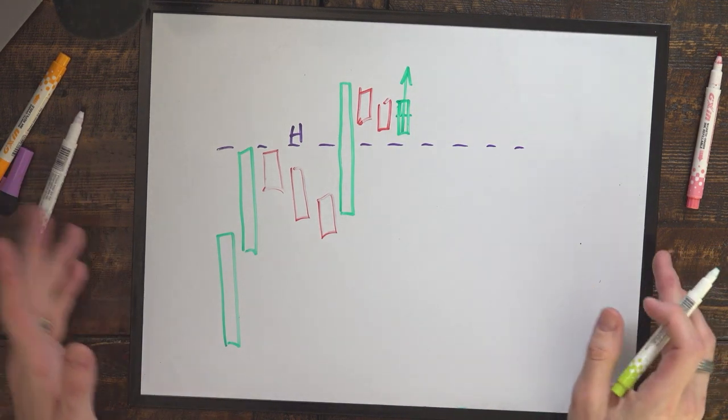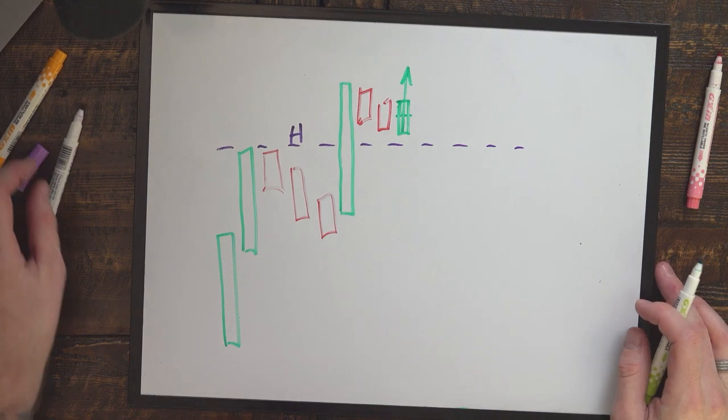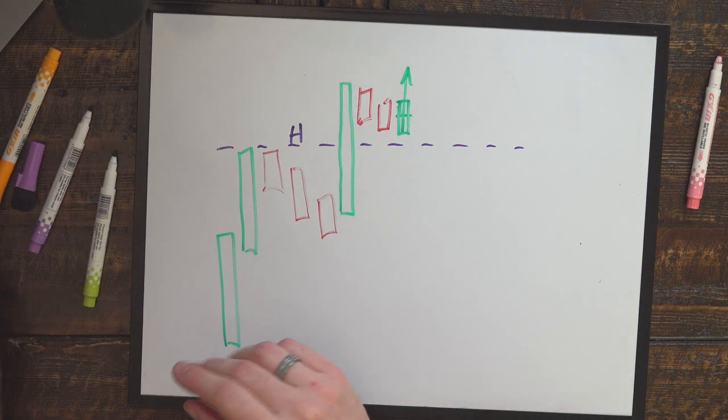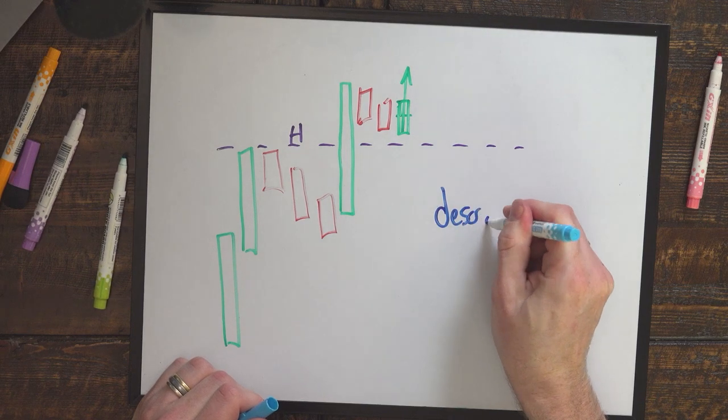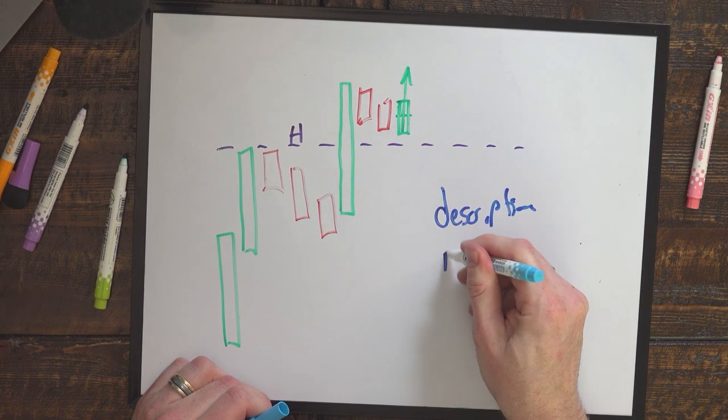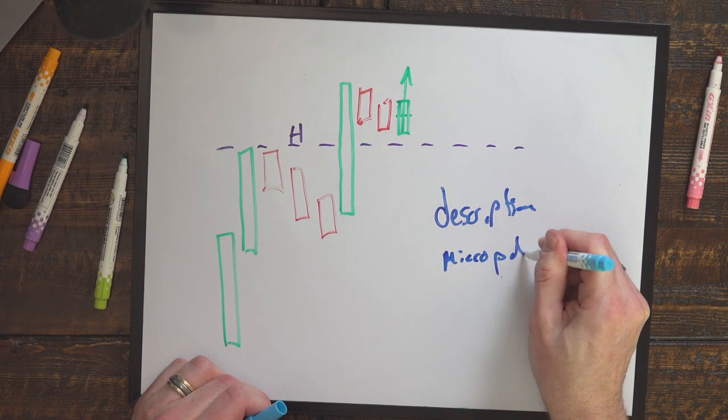All right. So that's a quick breakdown of the cup and handle formation. Those that are curious and want to learn a little bit more about my strategy, down in the description you will see a link to download my micro pullback PDF.